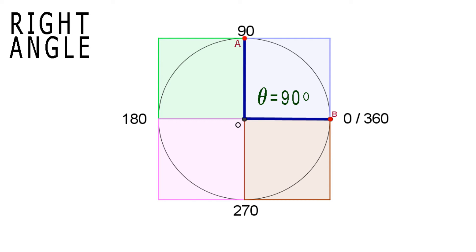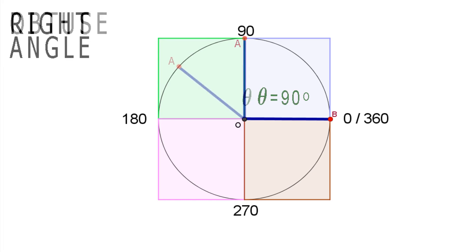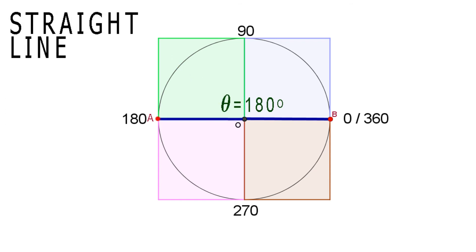An angle of exactly 90 degrees is called a right angle. Angles in the second quadrant, greater than 90, but less than or equal to 180 degrees, are called obtuse angles. An angle of exactly 180 degrees is called a straight line or a straight angle.